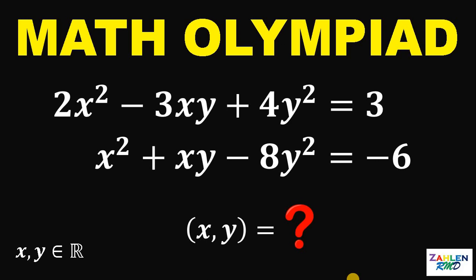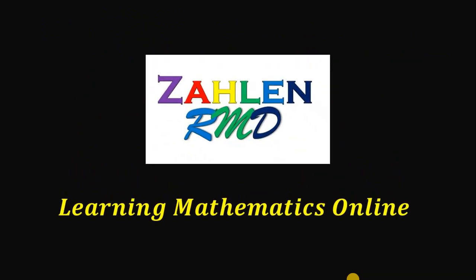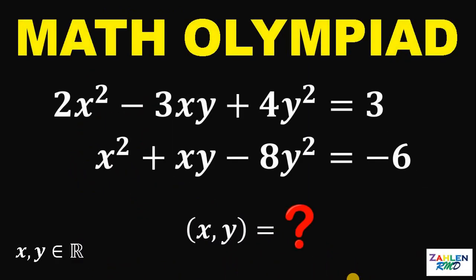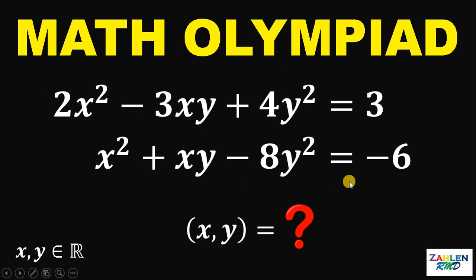Good day everyone, here's our math challenge for today. Solve for all pairs of x, y in this equation: 2x squared minus 3xy plus 4y squared equals 3, and x squared plus xy minus 8y squared equals negative 6, given that x and y are in the set of real numbers.